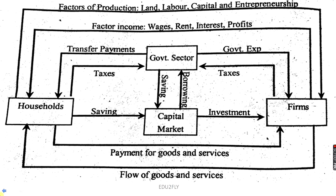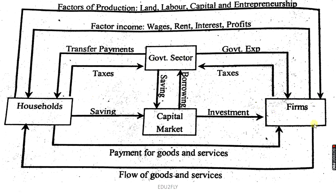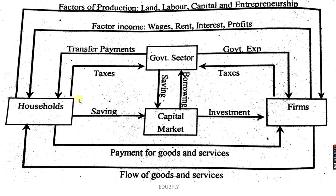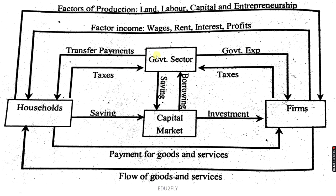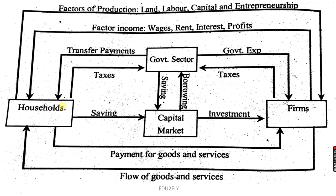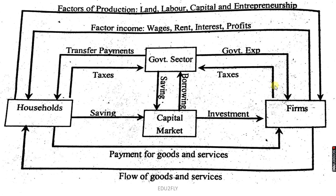The government acts both as a consumer and a firm. As a consumer it spends on the consumption of goods and services produced by the firms, and as a producer it produces goods and services for the economy. The government sector is interacting with both households and firms — collecting taxes from households and from firms, and giving transfer payments to the household. Transfer payments are unilateral payments, for example old-age pension. The government also makes expenditure payments to the firms.